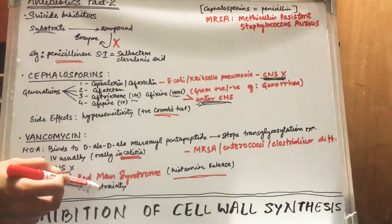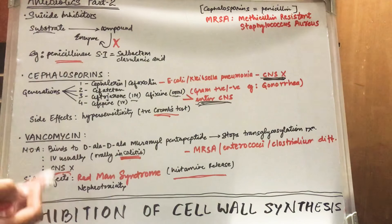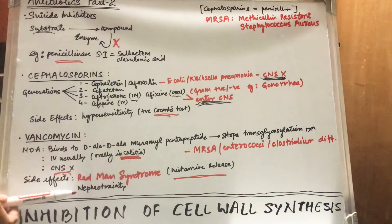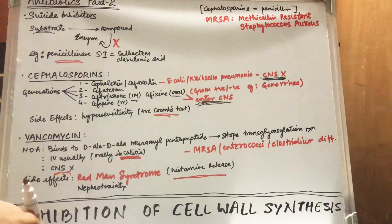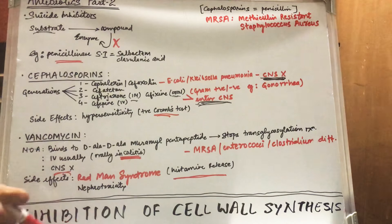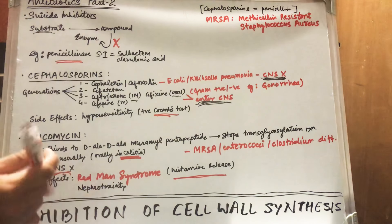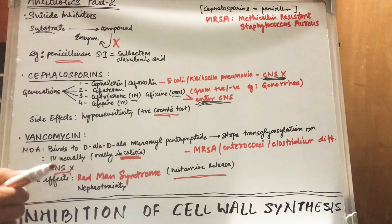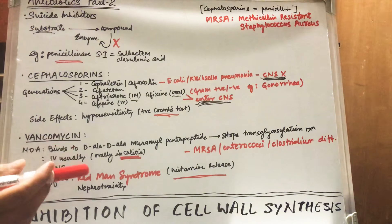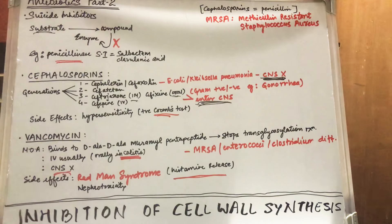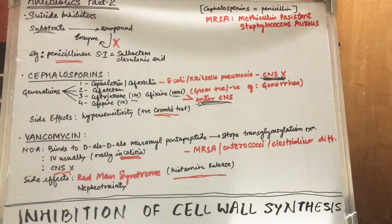Another side effect is nephrotoxicity, and one more is ototoxicity. In nephrotoxicity, you will see the person has proteinuria — that is, protein in the urine. In ototoxicity, the person will have problems with the ear, such as deafness and other signs and symptoms. That's all for the inhibition of cell wall synthesis. We'll discuss inhibition of protein synthesis in the next video.